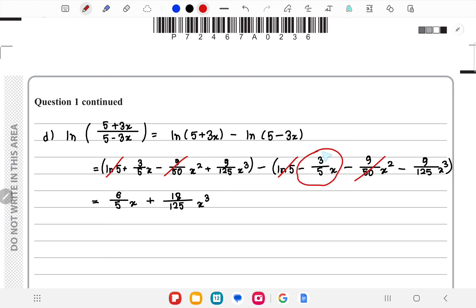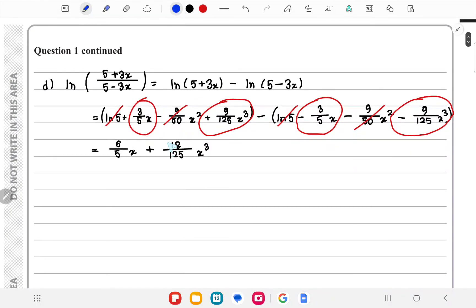So we'll have (3/5)x minus -(3/5)x, basically (3/5)x plus (3/5)x. And for this we'll have +(9/125)x³ minus -(9/125)x³, so basically getting this expression as the final answer. And that would be it.